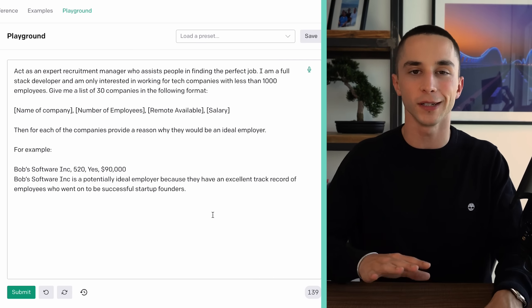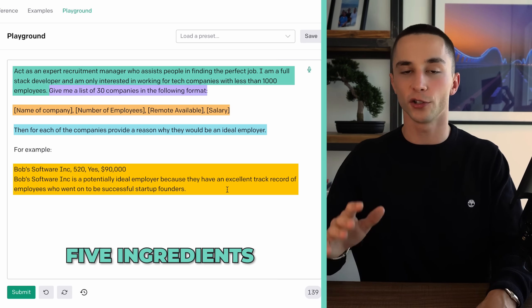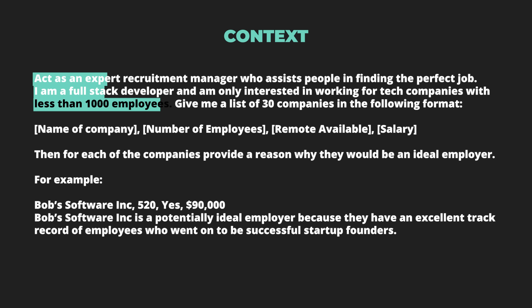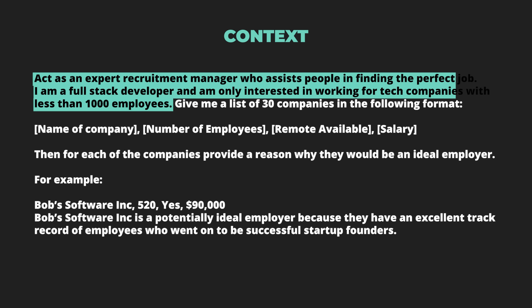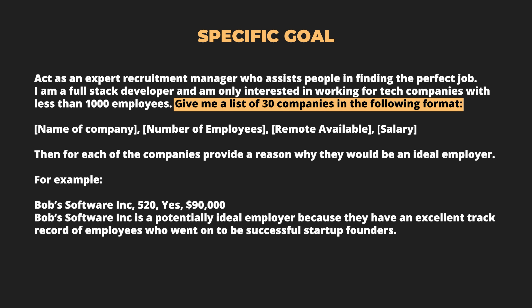Here we have a perfect prompt using the perfect prompt template — it has all five ingredients required to create a good prompt and maximize our chances of getting the outcome we want. First, we have the context, which often includes some sort of role prompting. We're essentially setting this into a role where it is an expert recruitment manager who assists people in finding the perfect job. We're first providing context as to who the bot is, and then providing a little bit more context on who I am and what I'm interested in doing. Then the next section of this prompt is 'give me a list of 30 companies in the following format.'